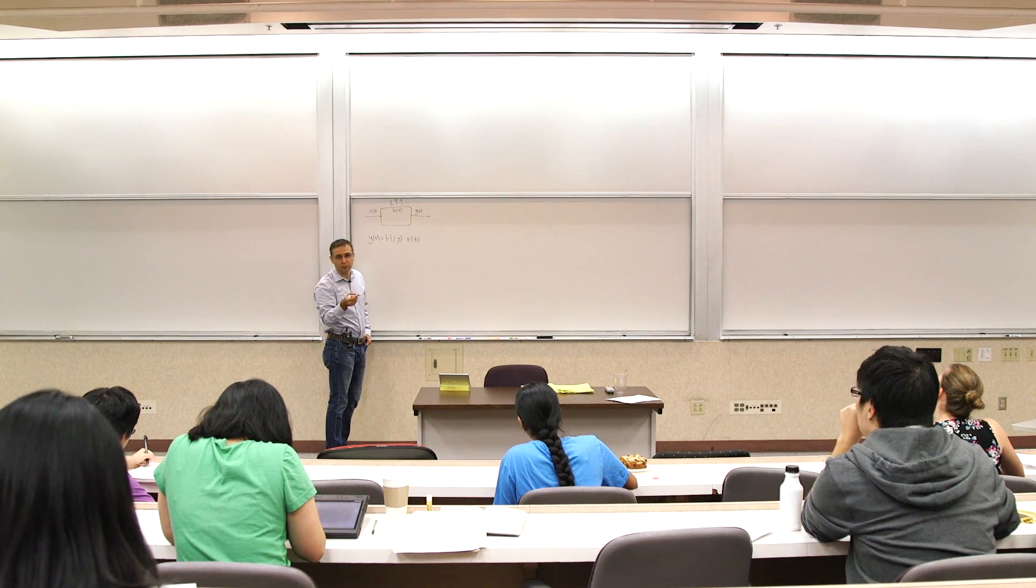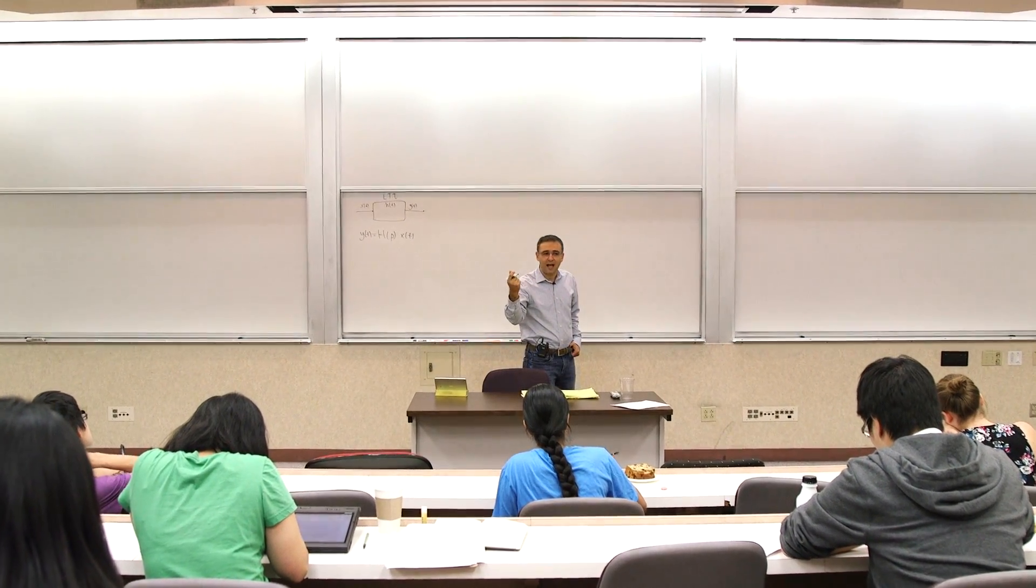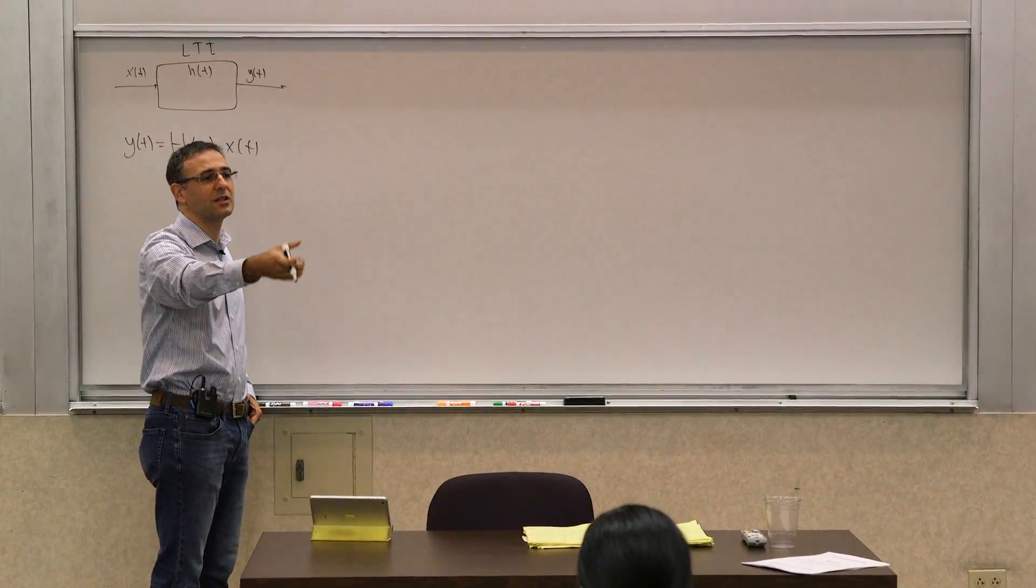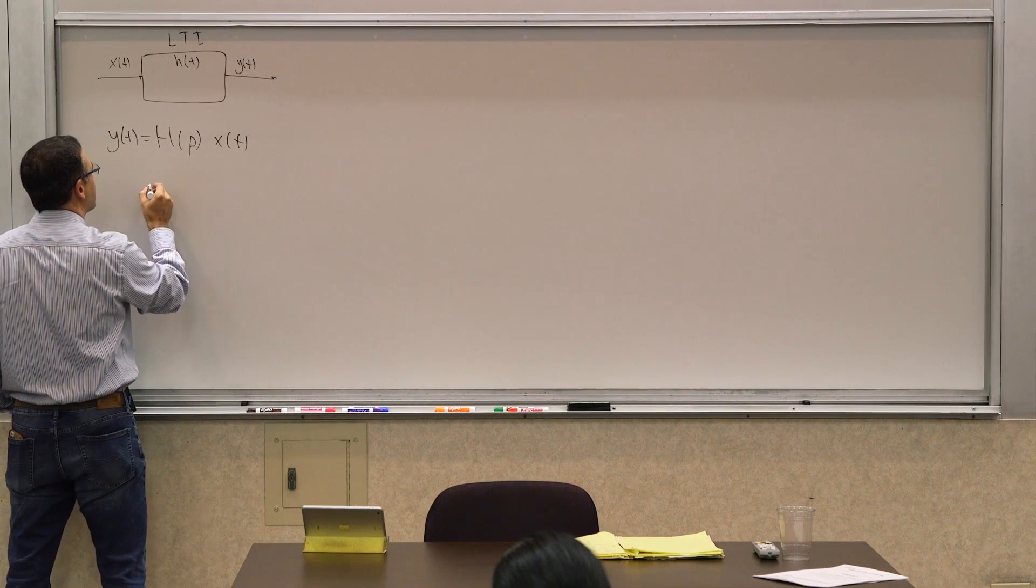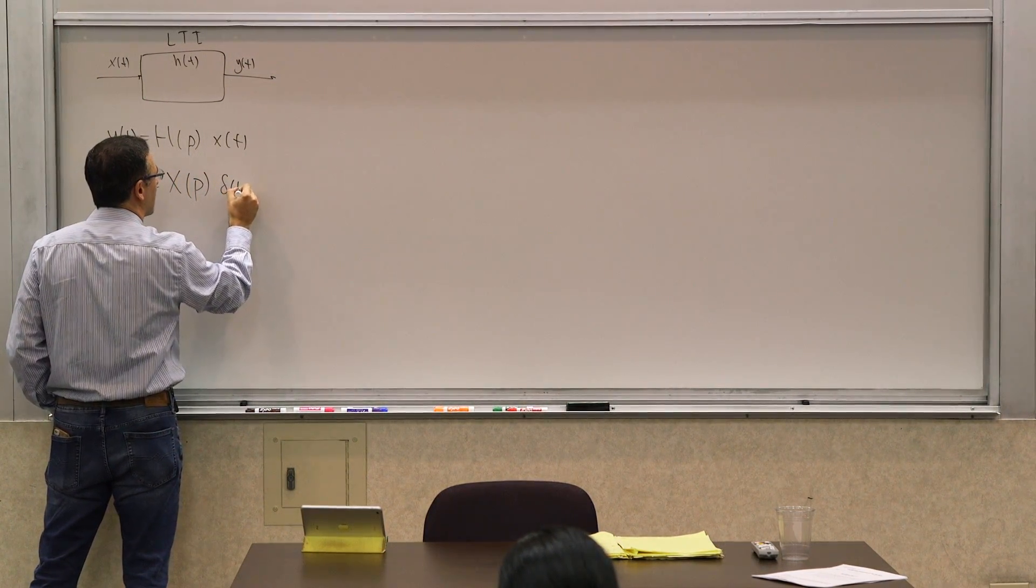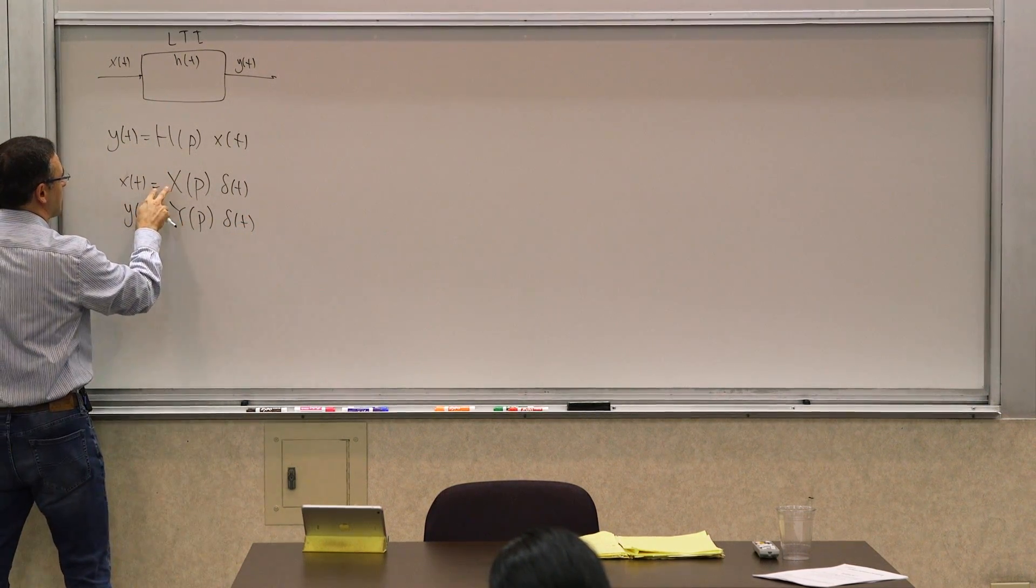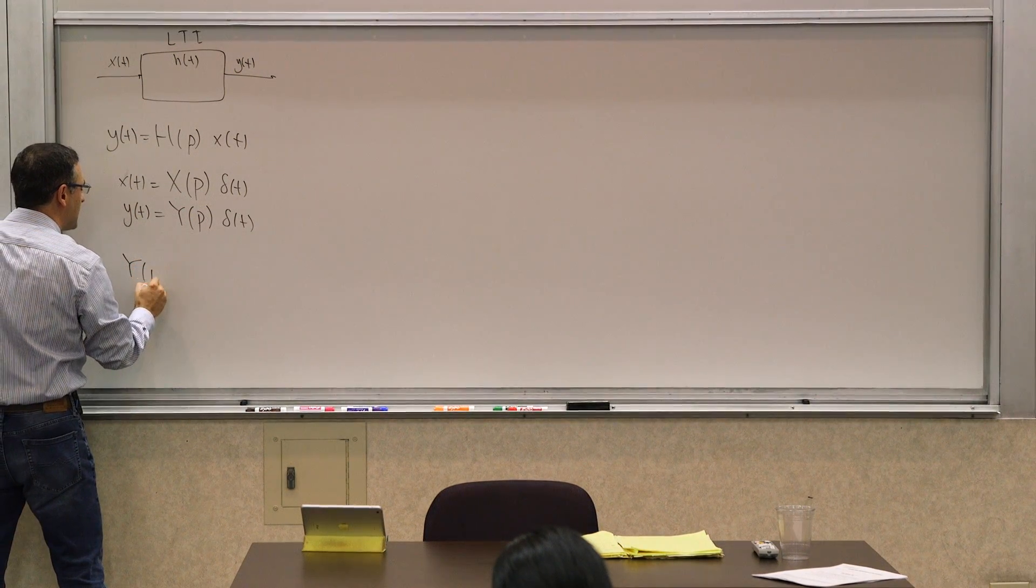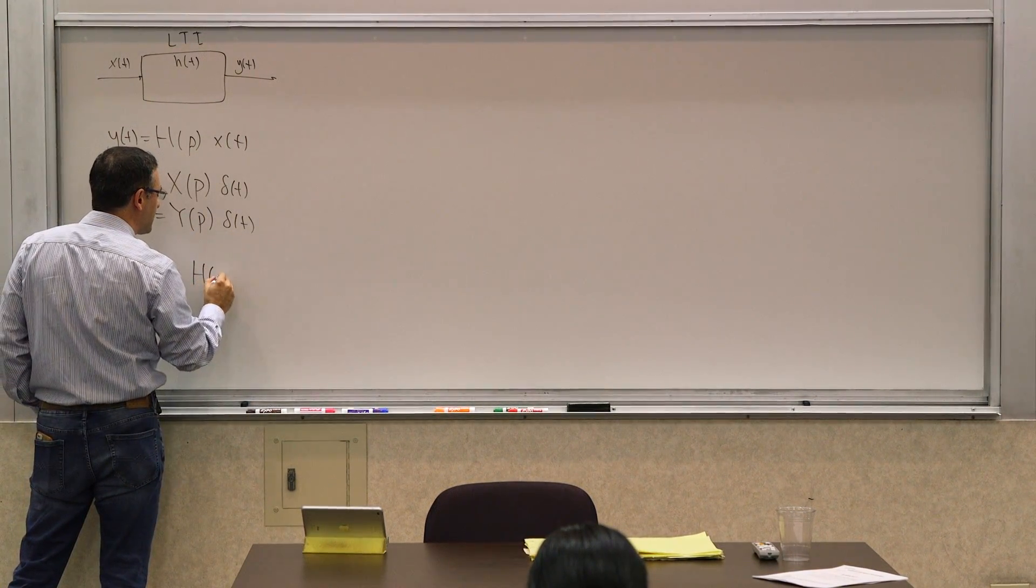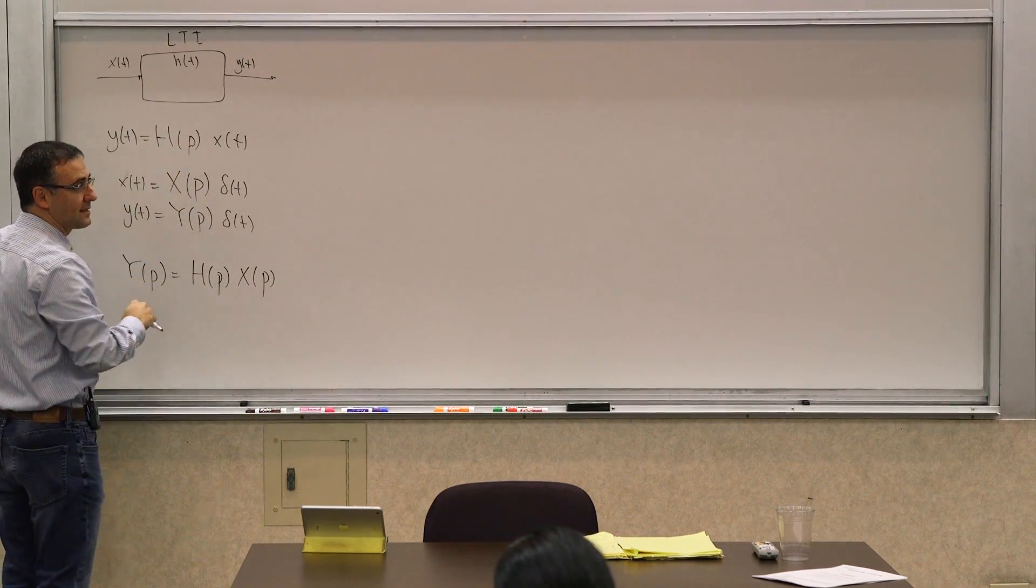But we then said that you could also express the inputs and outputs, the waveforms, in terms of an operator. The way we did that was by saying that an arbitrary waveform can be generated off of an impulse, which we knew had some interesting properties. So you could say our x of t, we expressed it as capital X of p, the operator X, operating on the delta of t. And the same thing for y of t, where we had Y of p operating on delta of t.